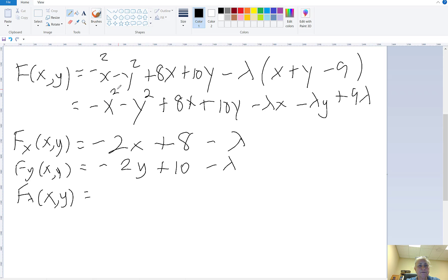In terms of lambda, x squared would be a constant, that's a 0, minus y squared would be a constant, that's a 0. No lambda there, it's a constant, no lambda there. It's going to be minus x, minus y, plus 9.